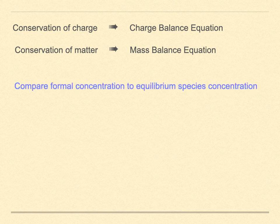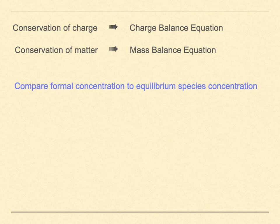One type of mass balance equation compares the analytical concentration, the formal concentration, of a species with the equilibrium concentration of that species in any of the forms it may appear.